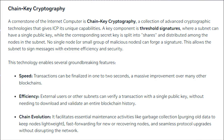This allows the subnet to sign messages with extreme efficiency and security. Chain key technology enables several groundbreaking features. Speed: transactions can be finalized in one to two seconds, a massive improvement over many other blockchains. Efficiency: external users of other subnets can verify a transaction with a single public key without needing to download and validate an entire blockchain history. Chain evolution: it facilitates essential maintenance activities like garbage collection, purging old data to keep nodes lightweight, fast forward for new or recovering nodes, and seamless protocol upgrades without disrupting the network.